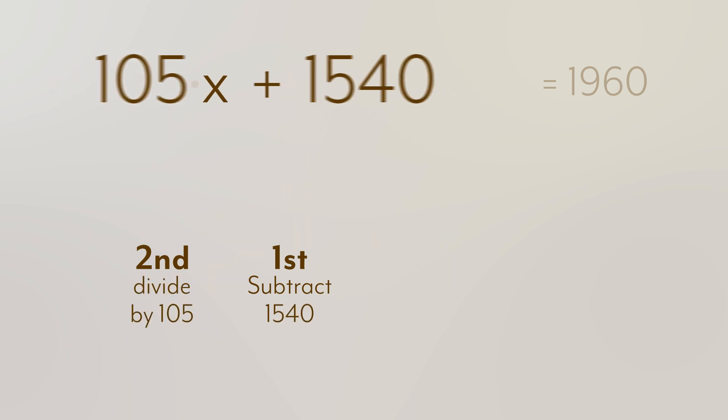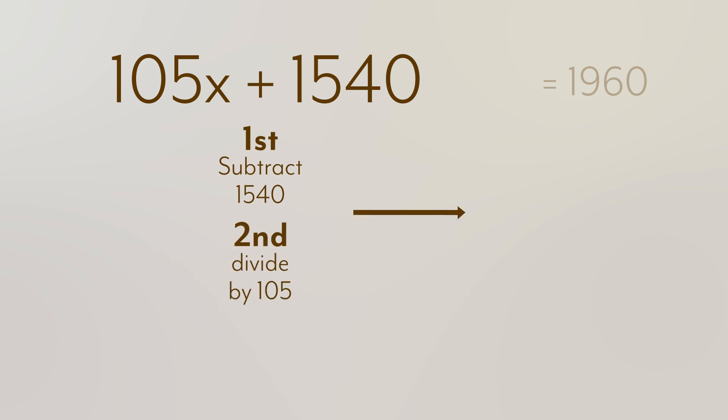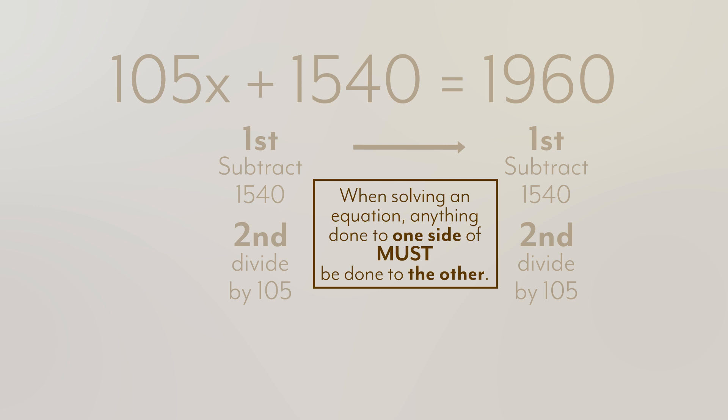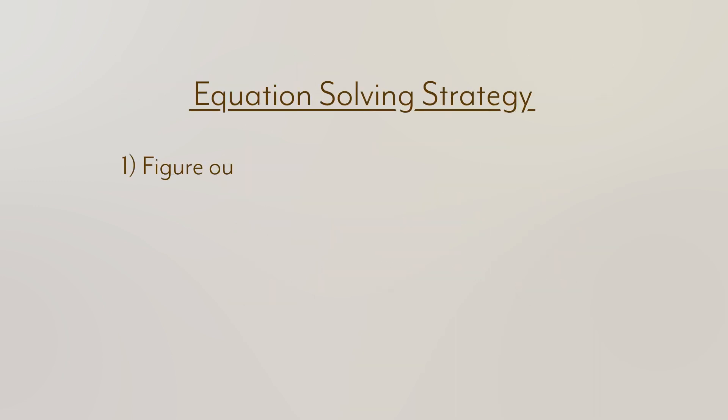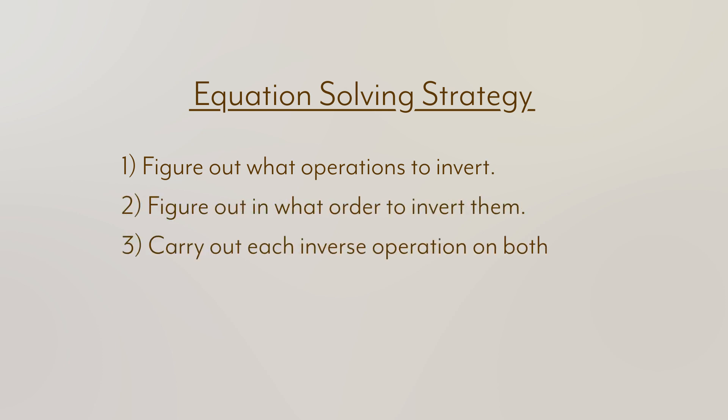Of course, to keep the pans in balance, anything we do to one side, we must do to the other. That is a crucial rule to understand, so keep that in mind. So, the strategy then, is to figure out what operations you need to invert, figure out what order to invert them in, and then carry them out on both sides of the equation.